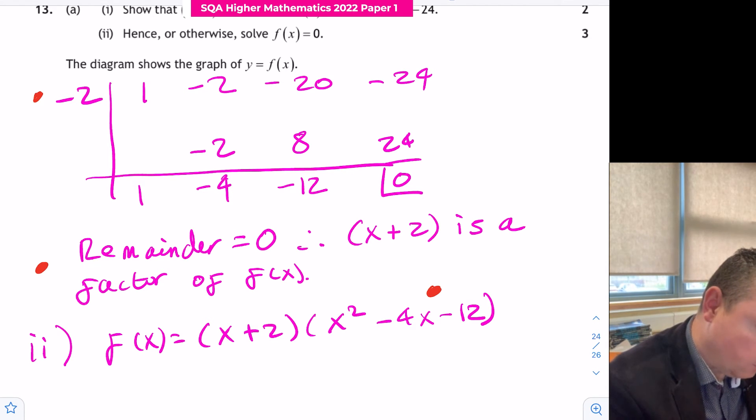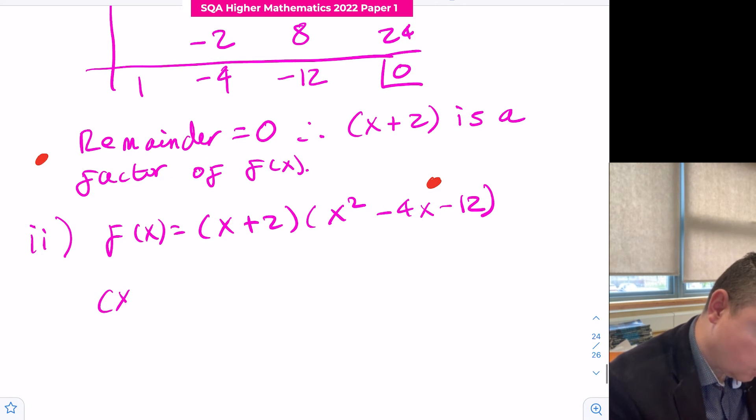That's our third mark. Then we need to solve it, so we make it equal to zero. We've got x plus 2 times x squared minus 4x minus 12 equals zero.